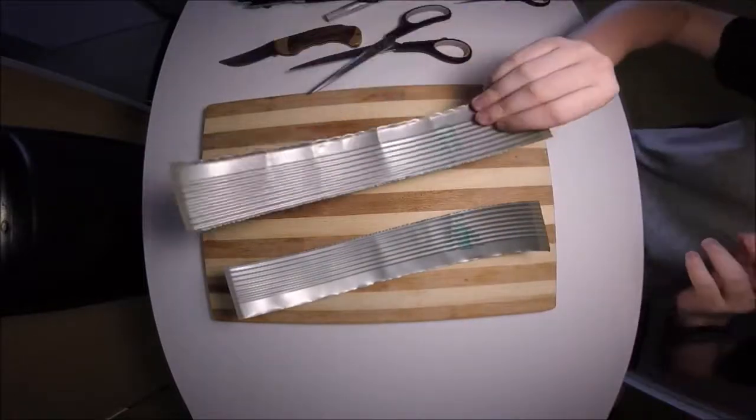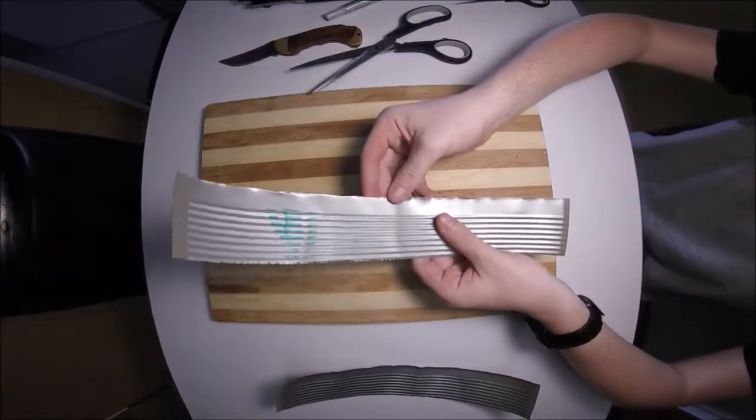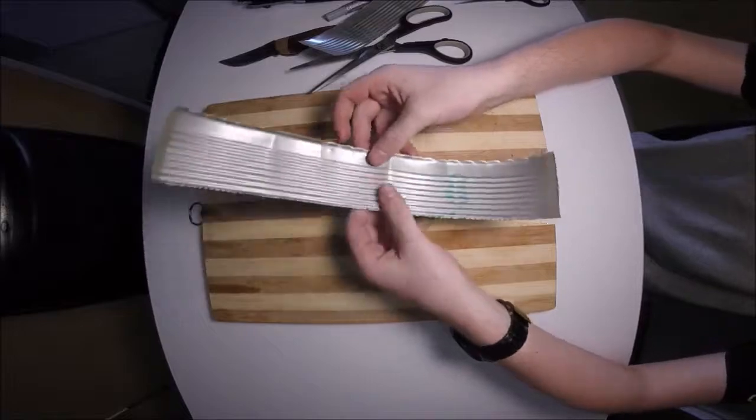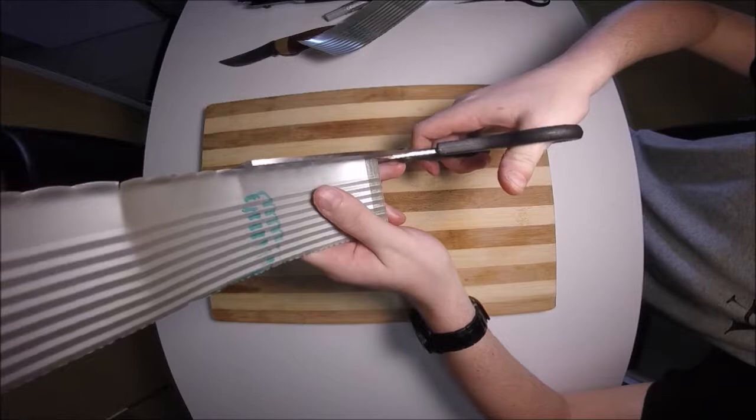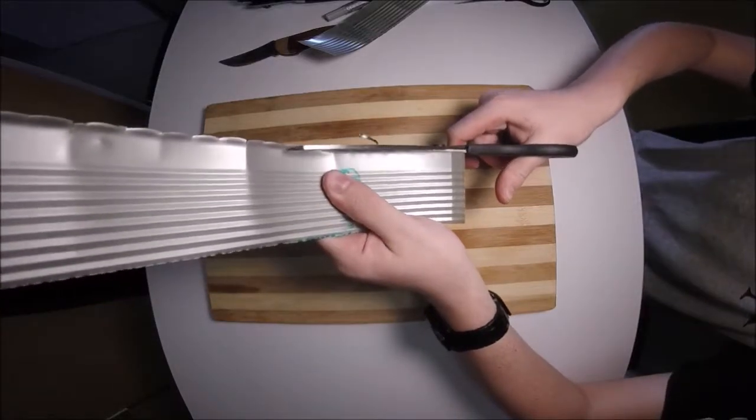The next step is to look at your edges. See this one here? It's quite a clean edge already to the point where we don't need to touch it up. This one, however, is a bit raised on one side. What you're going to want to do is cut along the surface with your scissors just to make it neater so that when you fold it over it looks better.